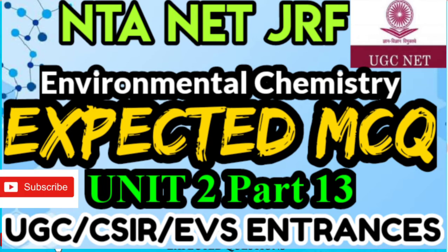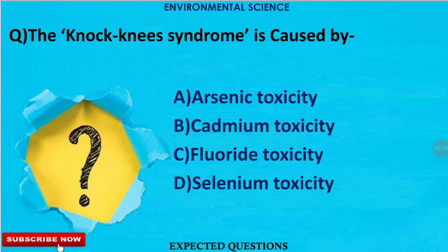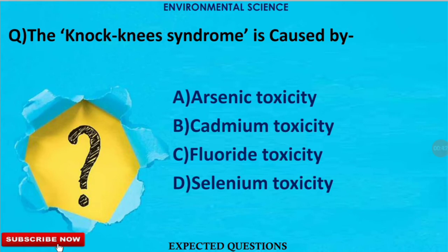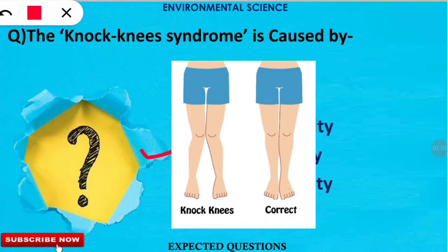The first question is: knockness syndrome is caused by which of the following toxicity? The correct option is C — fluoride toxicity causes knockness syndrome, which involves bending of the legs from the knee portion.